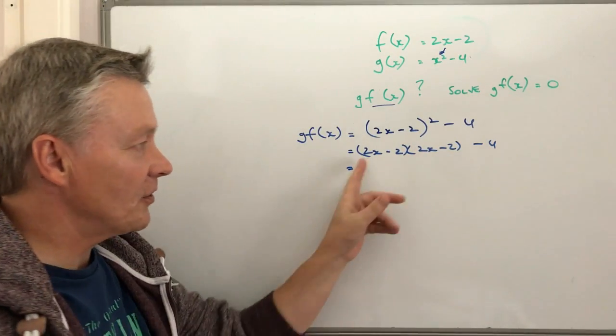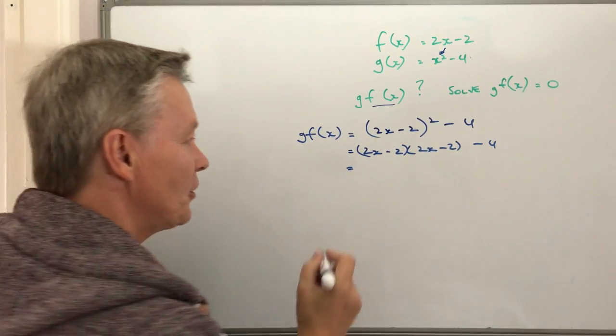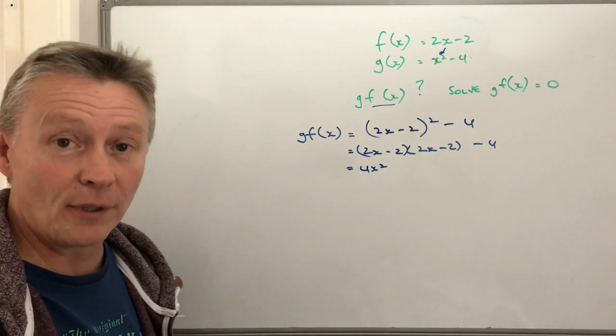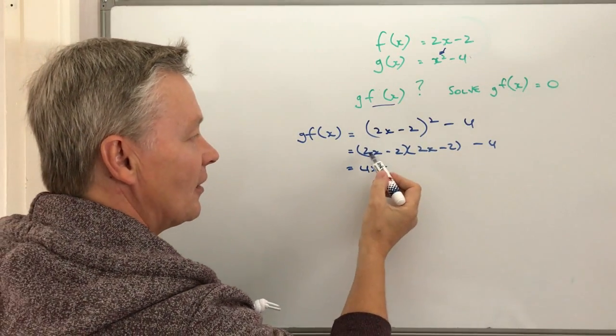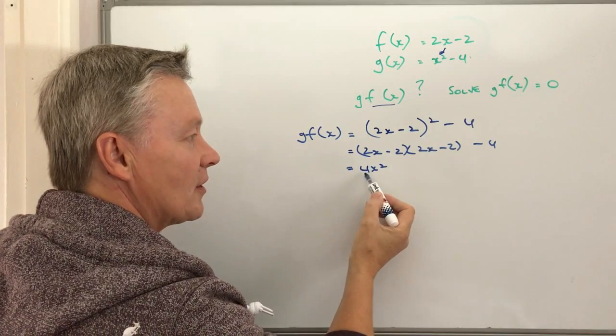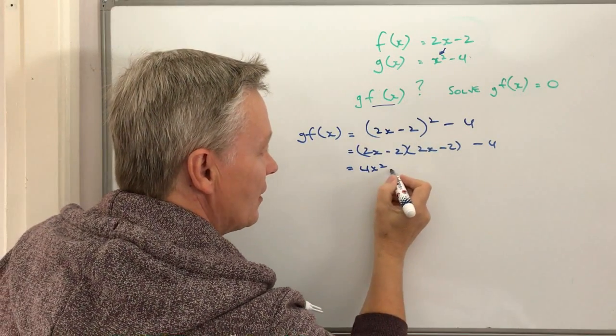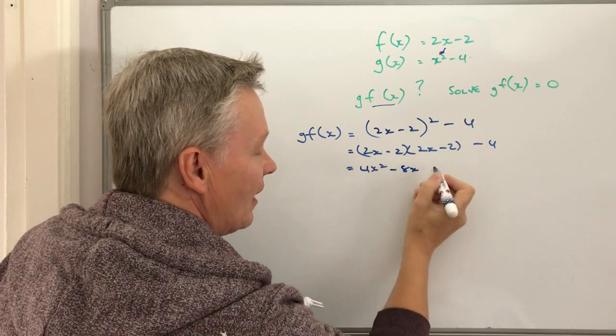Okay, I'm going to multiply that out. Now 2x times 2x, I'll do this fairly quickly because hopefully you're okay with multiplying out double bracketed terms. So I've got 2x times 2x is 4x squared minus 4x minus 4x is going to be minus 8x.